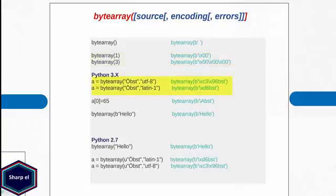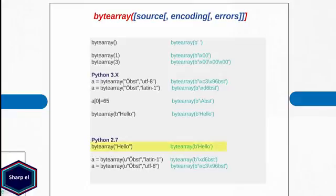In Python 3, strings are sequences of unicode characters, so if you call bytearray with a string argument the encoding argument is compulsory. When you call bytearray with a bytes object no encoding argument is required. Because bytearray is mutable, it is possible to change any byte in the bytearray object. In Python 2, string is a sequence of bytes, so no encoding argument is required when calling bytearray with a string. If you have unicode characters in your Python 2 string, you must use a unicode string for correct encoding.